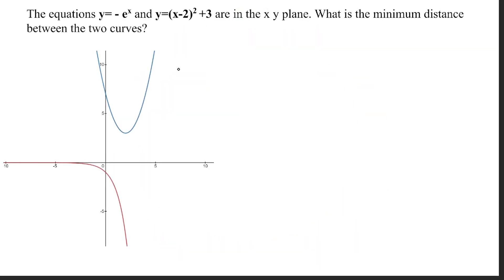Welcome back everyone, this is Mare here. In today's video we'll be finding the minimum distance between the curves y1 equals negative e to the x and y2 equals x minus 2 squared plus 3. The line of shortest distance between the two curves will be perpendicular to the two curves, meaning that the tangent lines of each curve at their respective points will be parallel.